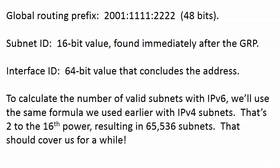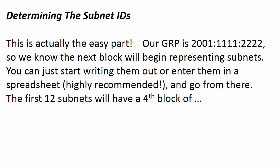So, similar to version 4: you've got your network portion at the beginning, your host portion at the end, and in the middle — the subnetting information. With a 48-bit prefix at the beginning and a 64-bit interface identifier at the end, that leaves us 16 precious bits for subnetting. The subnet ID is in the middle — a 16-bit value found immediately after the global routing prefix. To calculate the number of valid subnets, we use 2 to the 16th power, resulting in 65,536 subnets. That ought to keep us busy for a while.